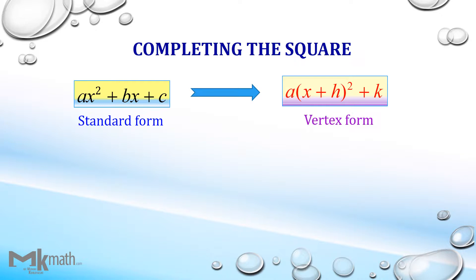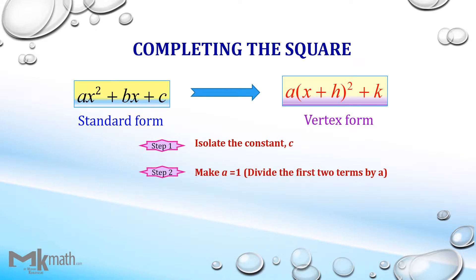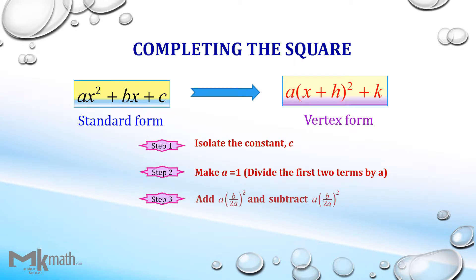There are three steps. Step 1: isolate the constant c. Step 2: make the leading coefficient a equal 1 by dividing the first two terms by a. Step 3: add and subtract half the coefficient of the middle term squared.